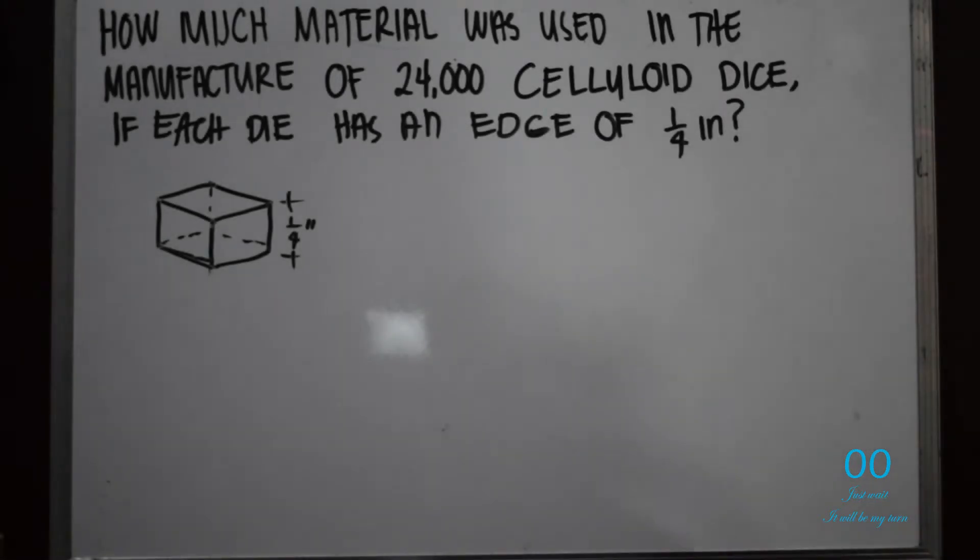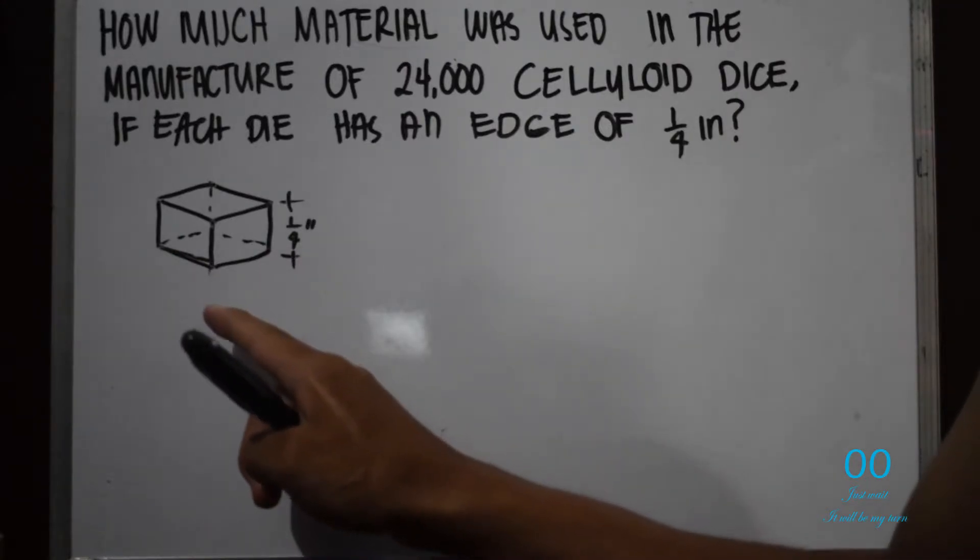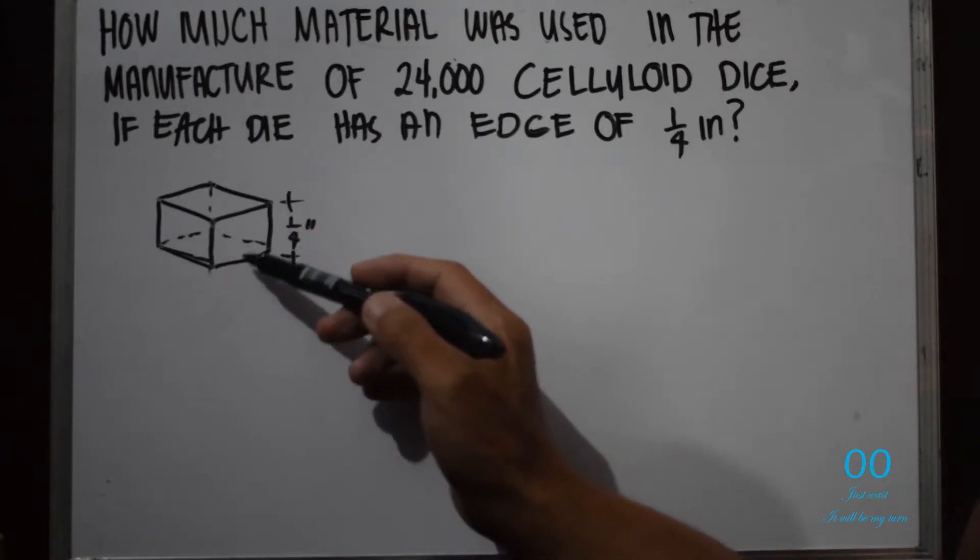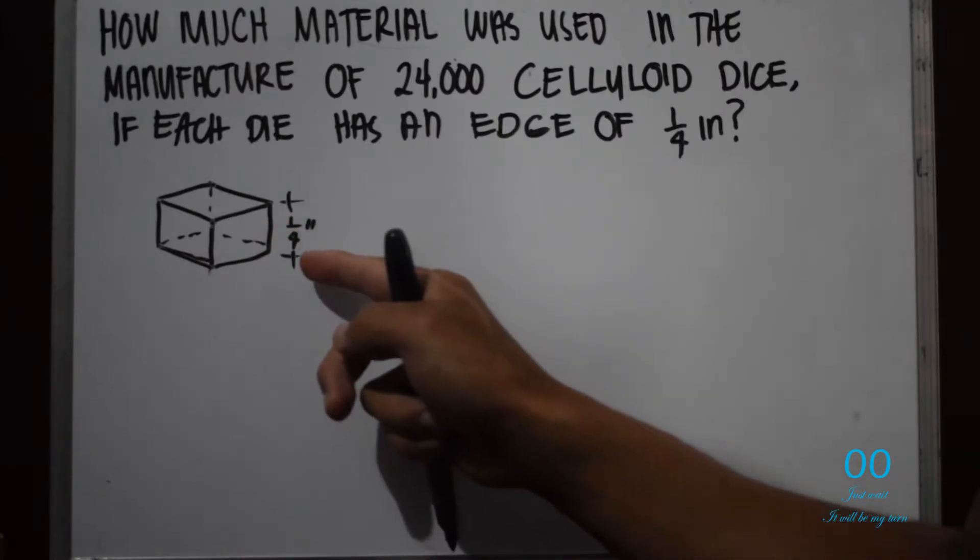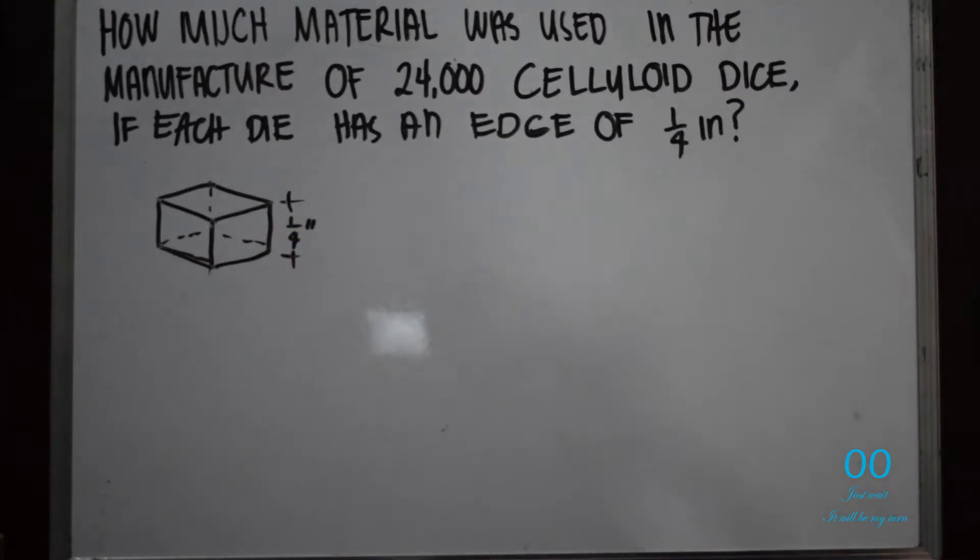How much material was used in the manufacture of 24,000 celluloid dice if each die has an edge of 1/4 inch? So this is our figure, this is the cube we might be creating 24,000 like this. The dimension is 1/4 inch or 0.25 inches.